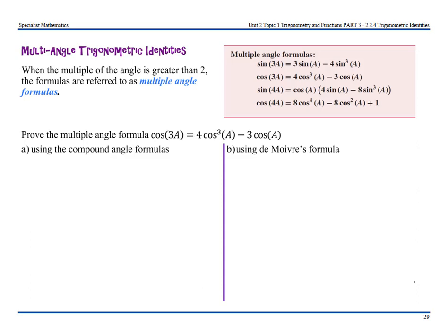In the box, I've written what the multiple angle formulas are in terms of proving them. Let's look at the first one: prove the multiple angle formula cos3a = 4cos³a − 3cosa. There are two ways to do this — using the compound angle formulas, or using De Moivre's theorem.